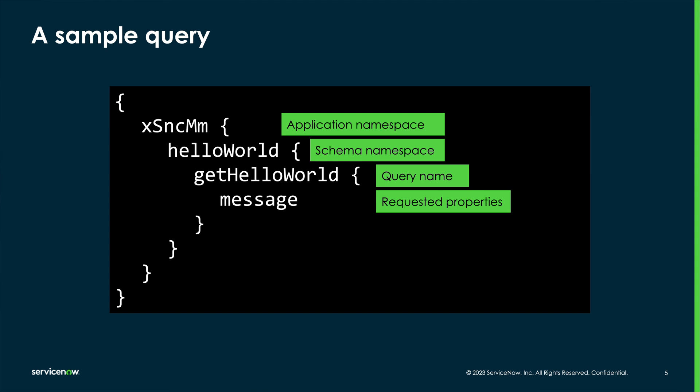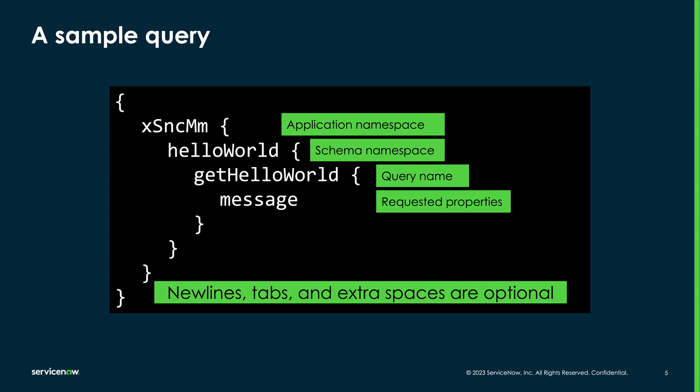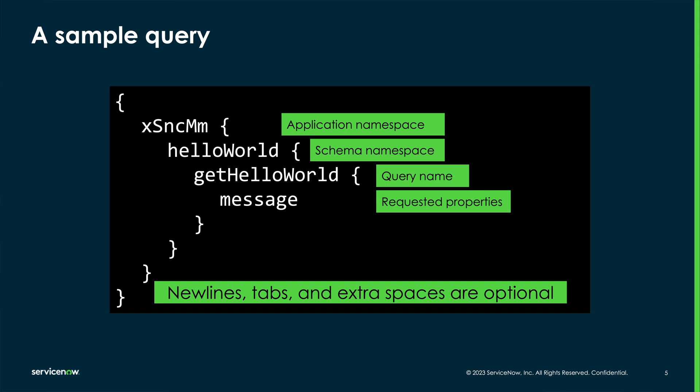We'll get more into the details of a query and building more complex examples in the next few videos. One more thing: new lines and tabs are optional. You'll often see these when building an API, but they're completely optional. Personally, I find queries — especially longer, more complex ones — easier to read in this prettified format, but some providers may stipulate that new lines and tabs are to be removed. Later in this series, I'll show you a way to create and maintain readable queries that can be trimmed down if the producer needs that. That's a quick overview — now let's get set up to do some building and testing in the next video.